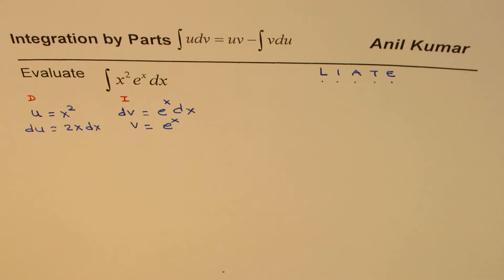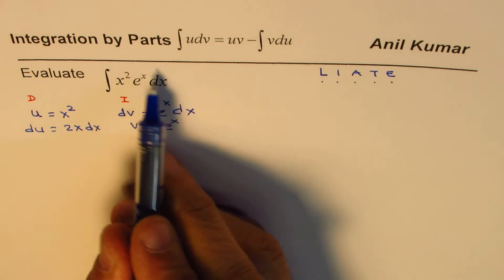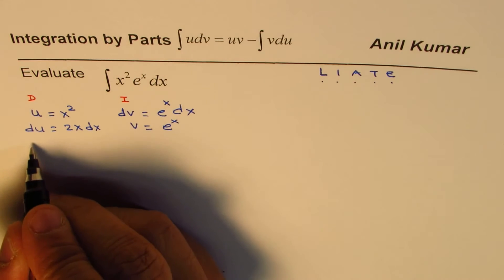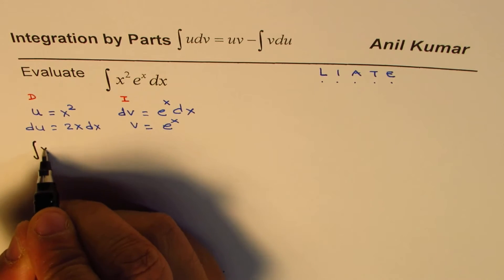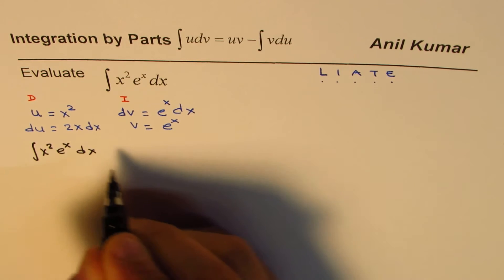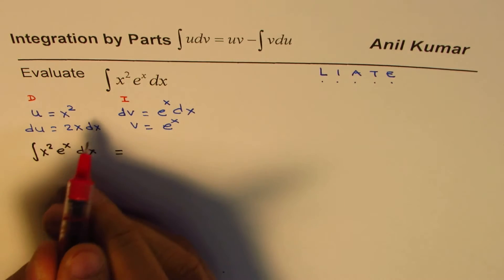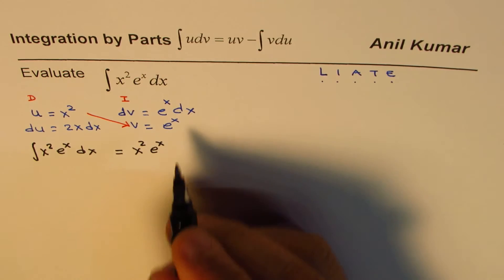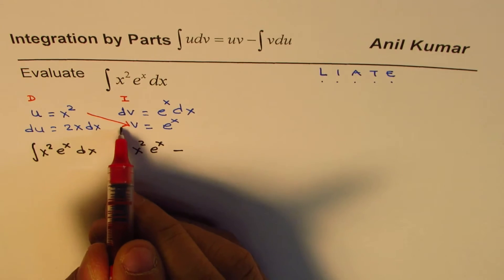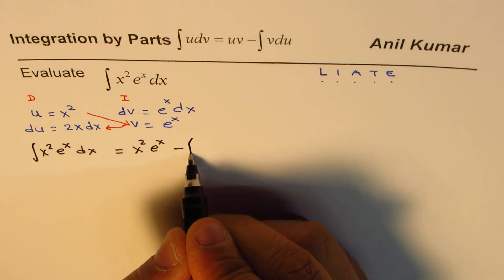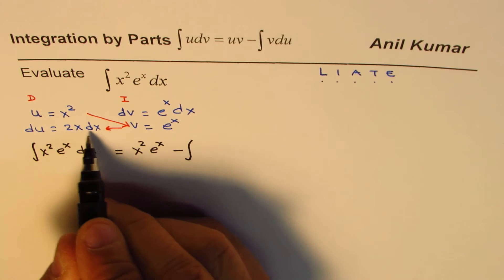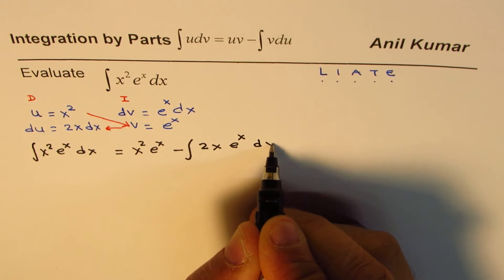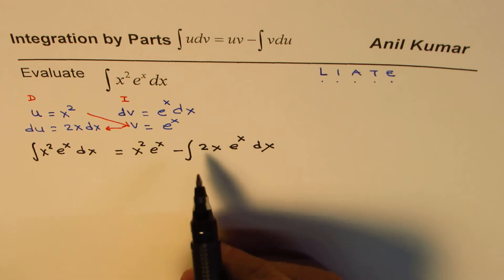Now we can write the integral using the formula for integration by parts. So the integral of x squared e to the power of x dx is equal to the product of these two, u v, which is x square e to the power of x, take away integral of these two, which is 2x e to the power of x dx. So let me write this as take away integral of 2x e to the power of x dx.